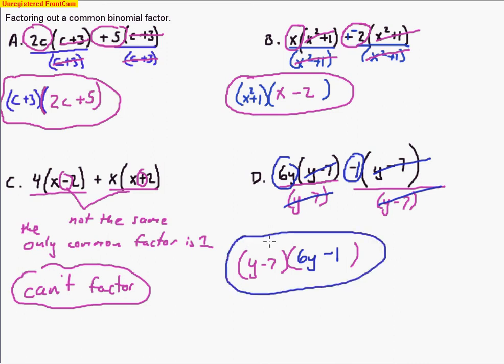Those are the two types of problems you'll see on tonight's homework: factoring out greatest common factors from a series of monomials, and factoring out a common binomial factor from polynomials. Good luck on tonight's homework.